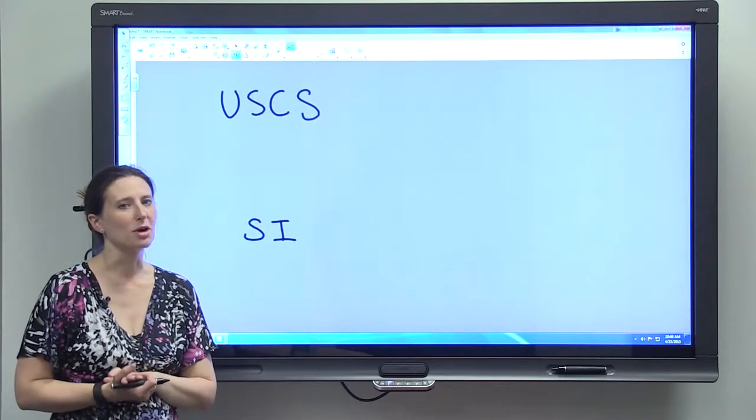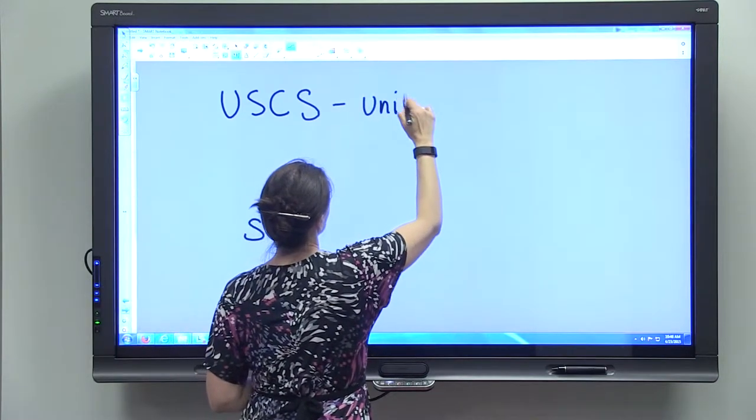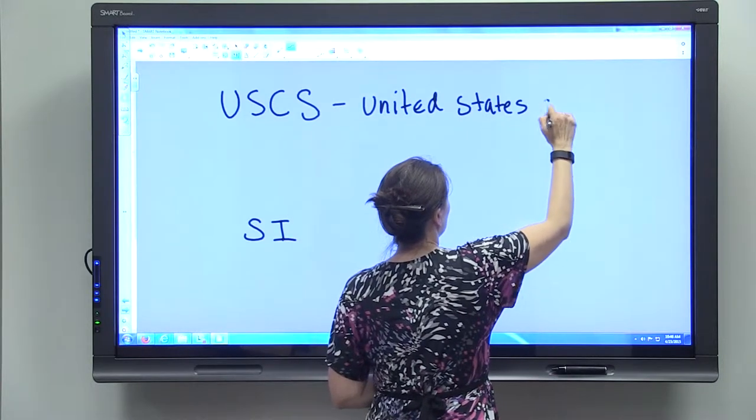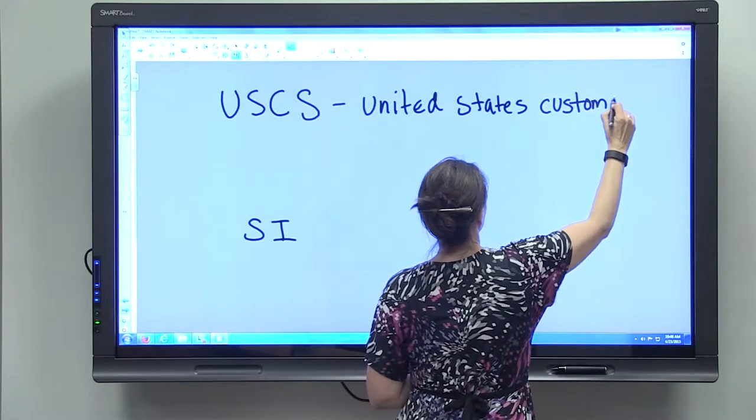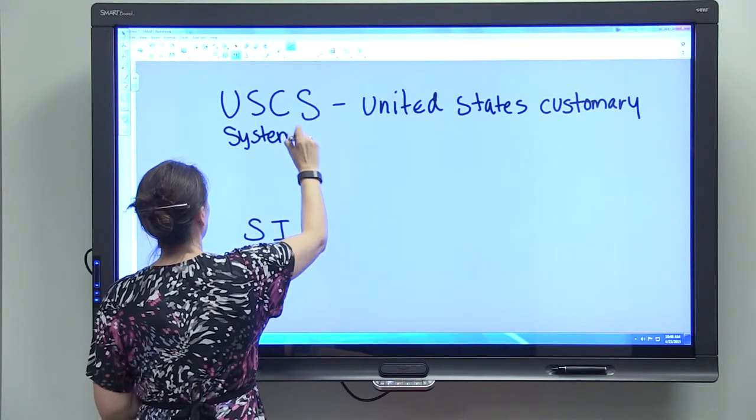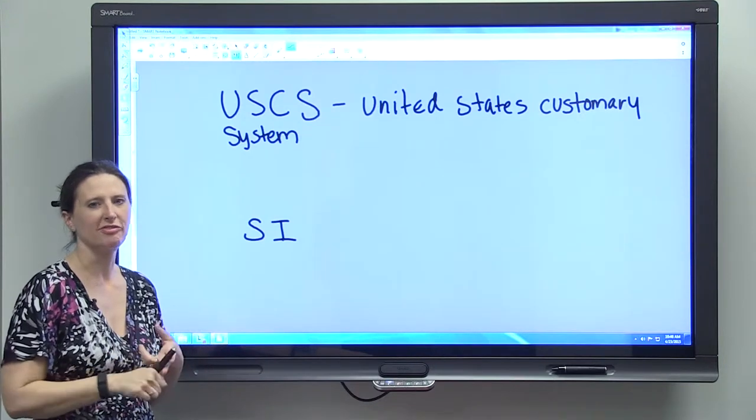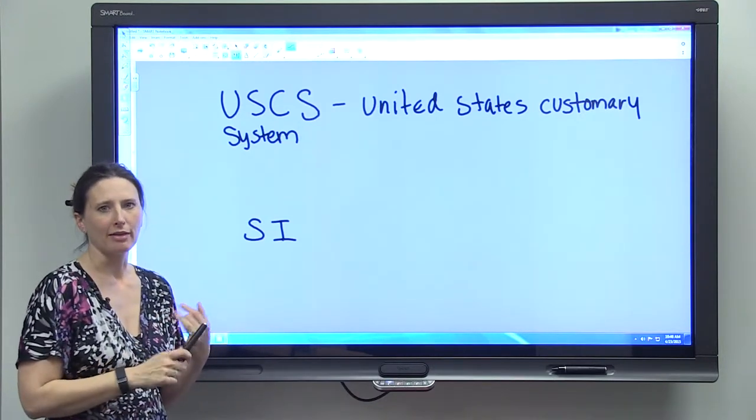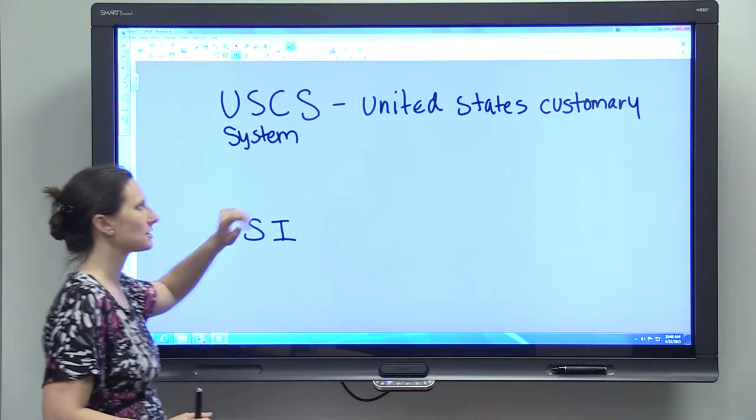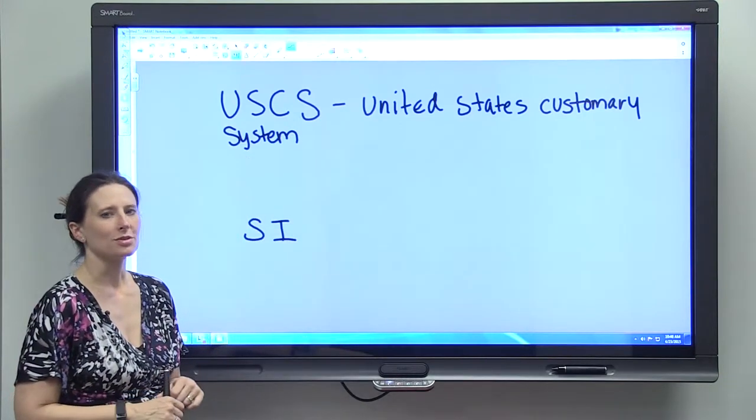The group of units you're probably most familiar with is known as the USCS, which stands for the United States Customary System. And that one includes those units I just talked about: pounds, feet, inches, gallons, quarts. They are the system of units that are customarily used in the United States.